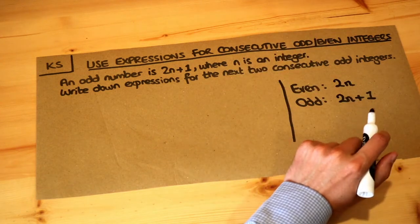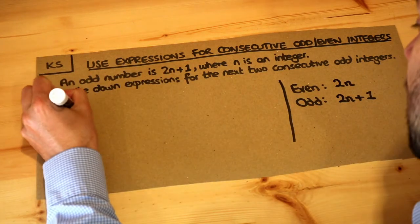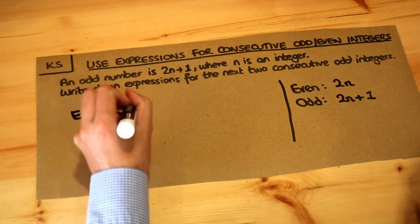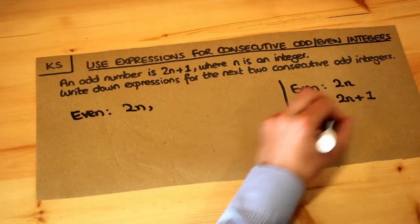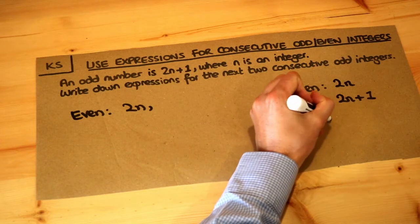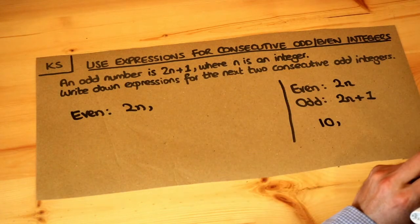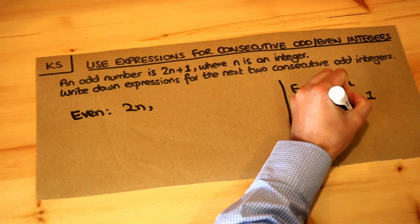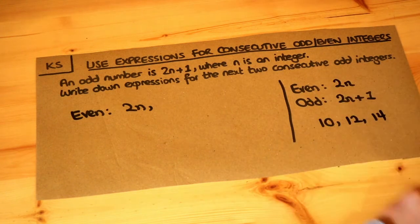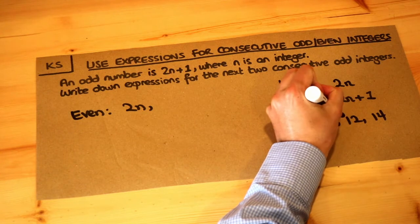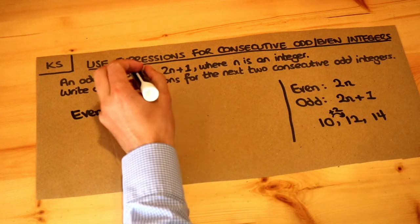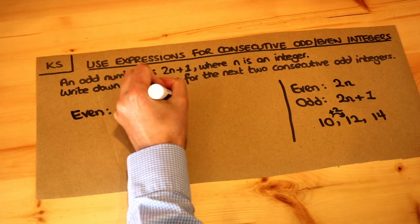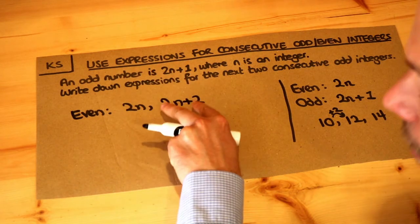What about consecutive odd and even integers? If you had one even number of 2n, then what would be the next even number? Think about it — if we took the number 10, the next even number would be 12, then 14. How do we get the next even number? We just add 2. So to get the next even number, we add 2 and get 2n plus 2.